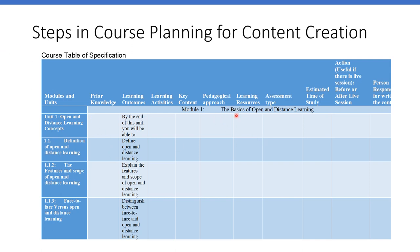For example, in the area of organization, you have Module 1: The Basis of Open and Distance Learning. Under the module, the first unit — Unit 1 — is Open and Distance Learning Concepts. The learning outcomes have been defined: by the end of this unit, you will be able to define open and distance learning, explain the features and scope of open and distance learning, and distinguish between face-to-face and open and distance learning.